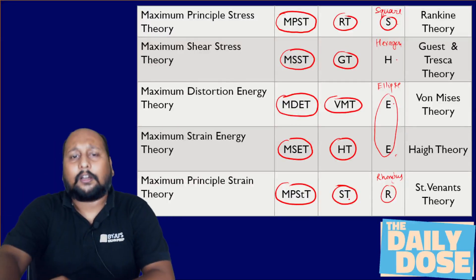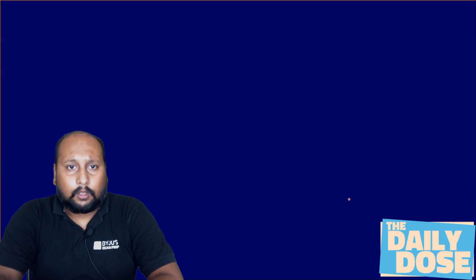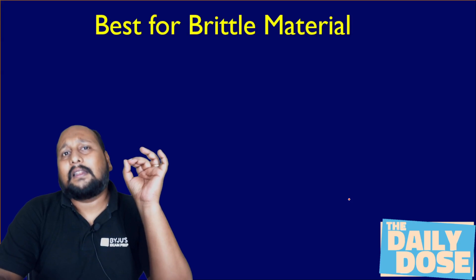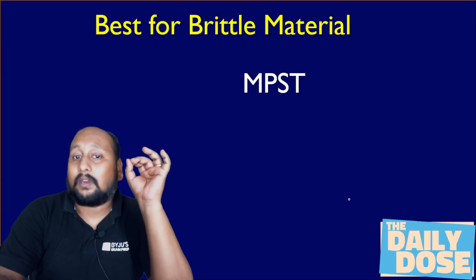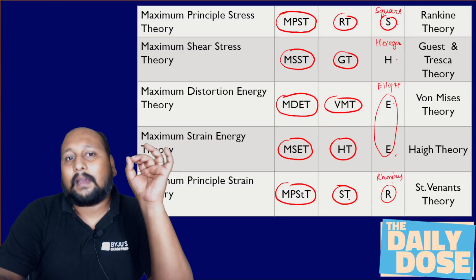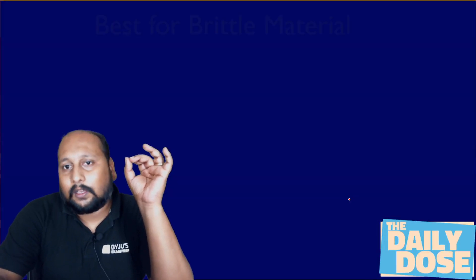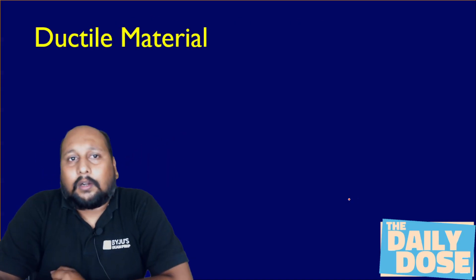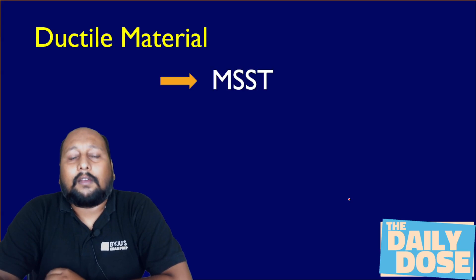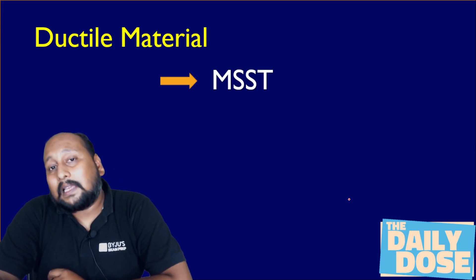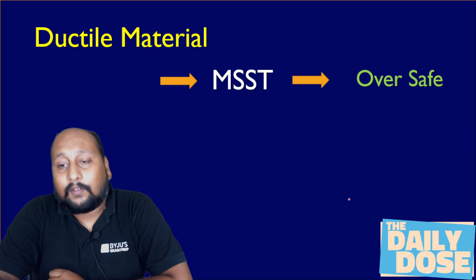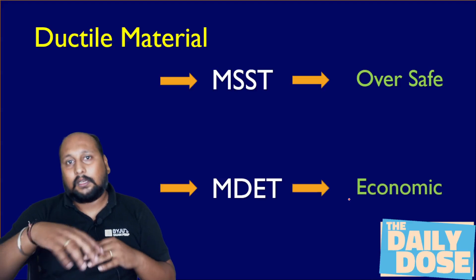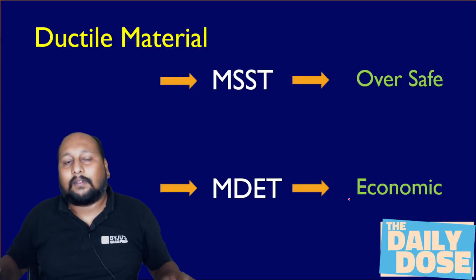Now for more understanding: for ductile material, the best theory to follow is MDET — maximum distortion energy theory. MPST — maximum principal stress theory — is used for brittle material. For ductile material we have two possibilities: if you are using MSST, we get an over-safe condition. And if we use MDET, we get an economical design perspective — the design will be most suitable.